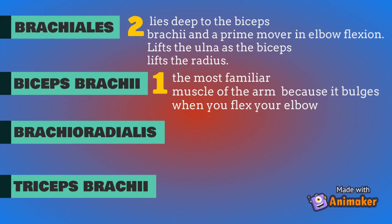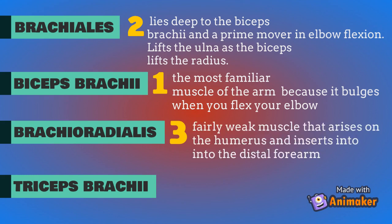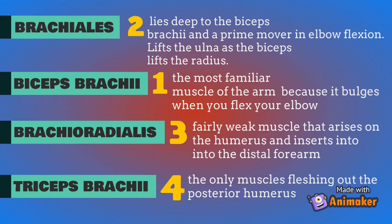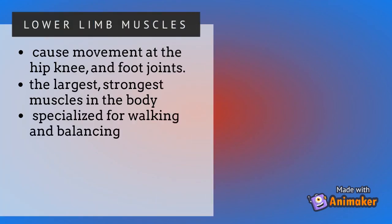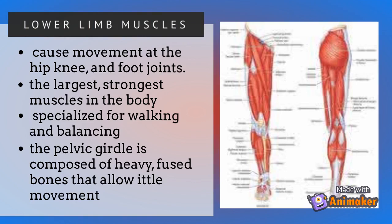The brachialis lifts the ulna as the biceps lift the radius. Third is the brachioradialis — a fairly weak muscle that arises on the humerus and inserts into the distal forearm. Fourth is the triceps brachii, the only muscle on the posterior side of the upper limb.